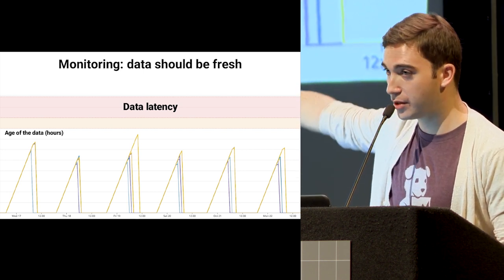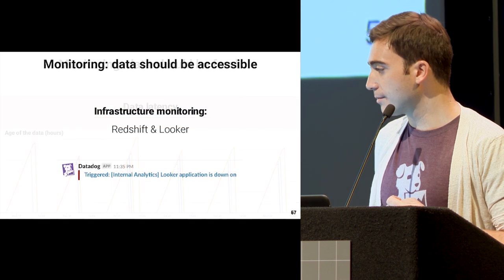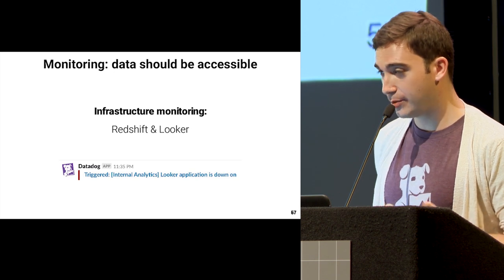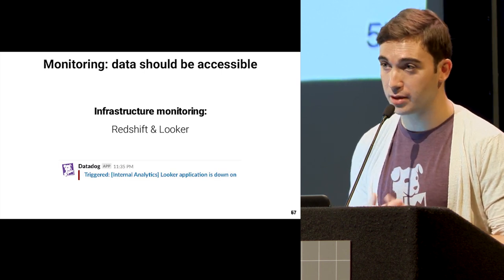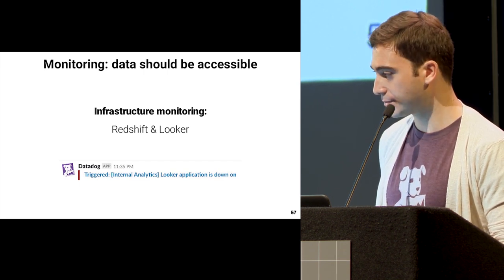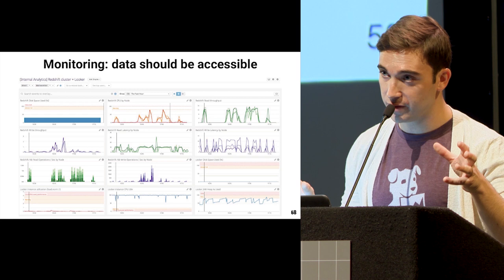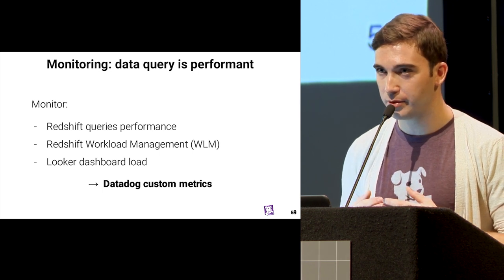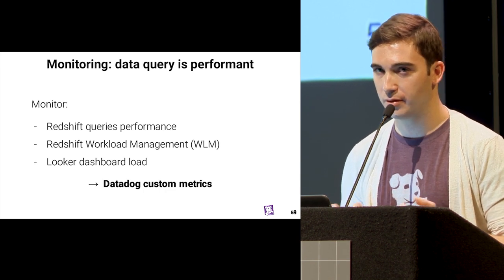The data engineering team also monitors latency — how old the data is somewhere, like for us in S3. That way, if the pipeline doesn't run, you know the data is getting older and older, and maybe your customers are impacted — so you can set powerful alerts on this too. Every time the pipeline or a job runs, the age of the data comes back to zero. The data should not only be fresh, but accessible. We monitor our own infrastructure — Redshift and Looker mainly — because those are the two main tools people interact with to access the data. We have alerts if some of them are down.